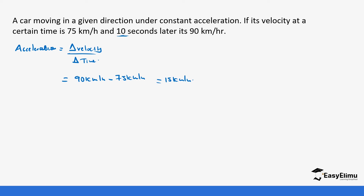The time we are working with is 10 seconds. Notice we are working with seconds but our velocity is in hours, so we need to make conversions to continue with this calculation. One kilometer equals 1000 meters and one hour equals 3600 seconds.